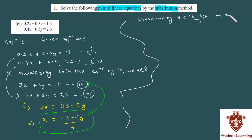In equation 3, when we substitute, we get 2 times x, which is 23 minus 5y over 4, plus 3y equals 13. This is the third equation in which we put the value of x.